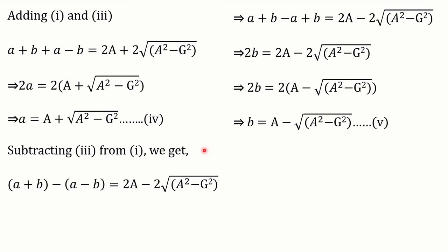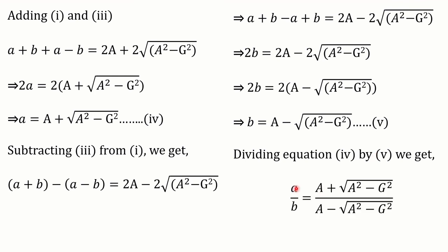Now let's divide equation 4 by equation 5. On dividing, we get a/b = (A + √(A² - G²)) / (A - √(A² - G²)), which is the second part to be proved. Thank you.